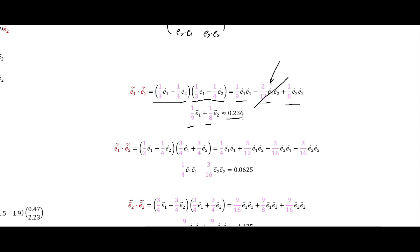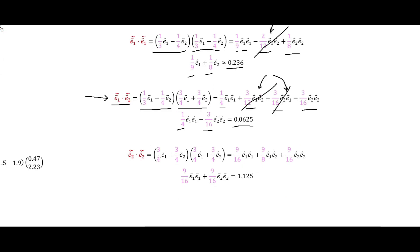Next we compute ẽ₁·ẽ₂, which is the off-diagonal element. Since the basis is not orthonormal, this will not be zero. We FOIL out ẽ₁ and ẽ₂ in terms of e₁ and e₂, getting (1/4)e₁e₁ + (3/12)e₁e₂ − (3/16)e₂e₁ − (3/16)e₂e₂. The cross terms e₁e₂ are zero in the orthonormal basis, so we get 1/4 − 3/16 = 0.0625.